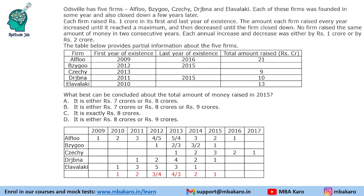The next question asks: what best can be concluded about the total amount of money raised in 2015? The values for A, B, C, D in 2015 are tabulated and certain — summing to 7 crores. Company E may or may not exist in 2015: if it ends in 2014, it raises 0 crores in 2015; if it continues to 2015, it raises 1 crore. So the answer is 7 or 8 crores.